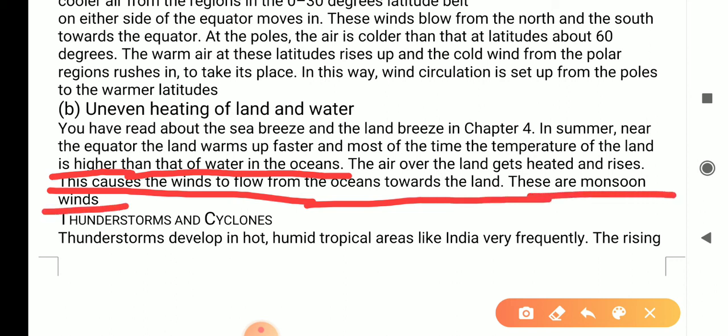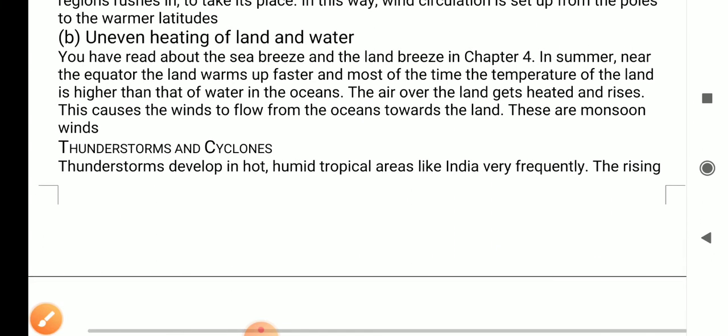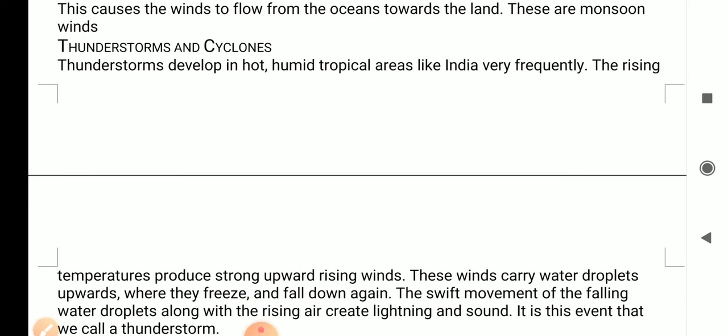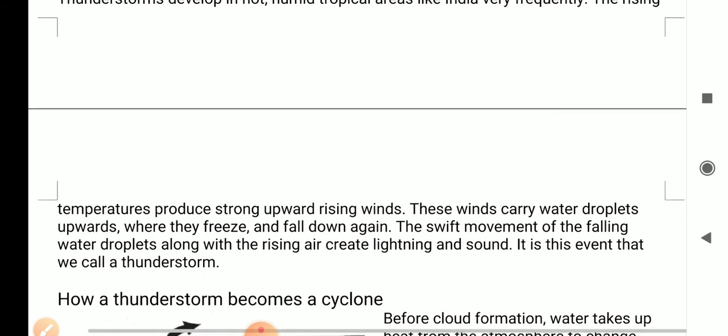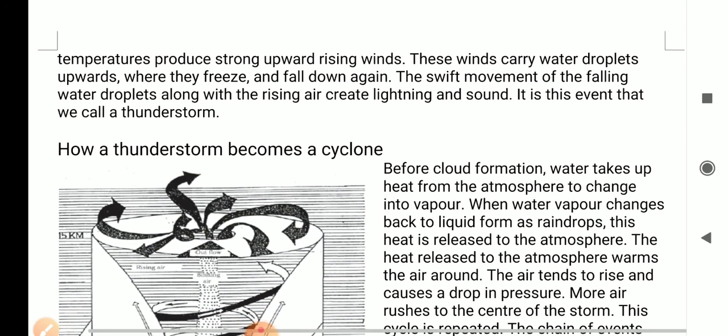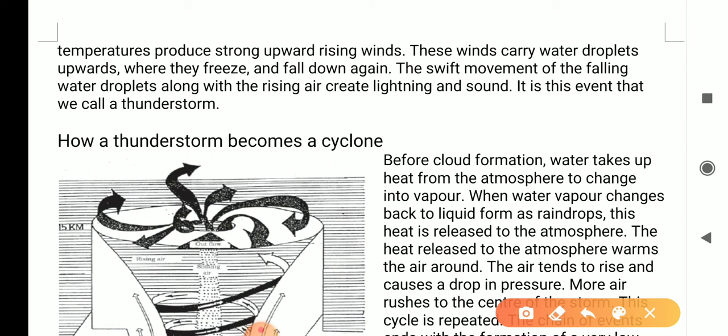These are monsoon winds. The thunderstorm and cyclone. Thunderstorms develop in hot, humid, tropical areas like India, very frequently. The rising temperature produces strong upward rising winds. These winds carry water droplets upward, where they freeze and fall down again. The swift movement of the falling water droplets along with the rising air creates lightning and sound. It is this event that we call a thunderstorm.